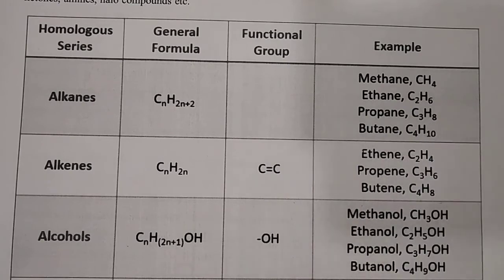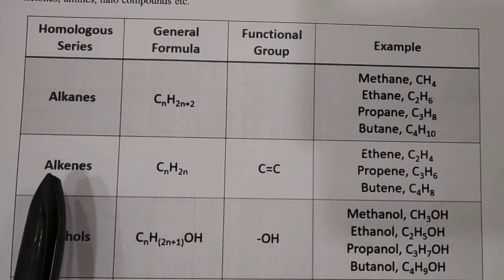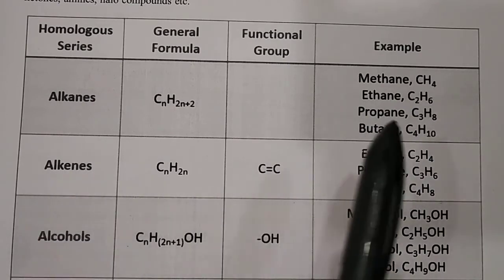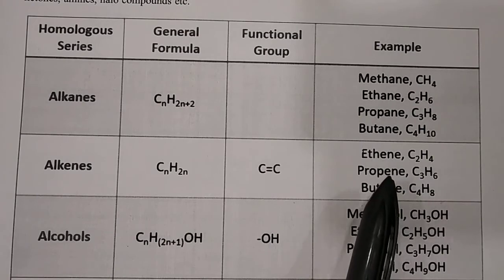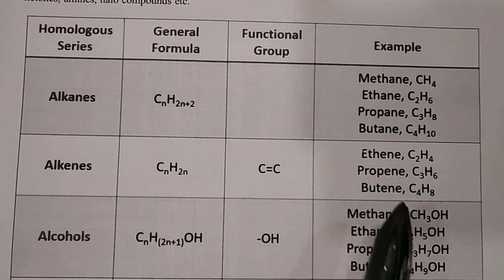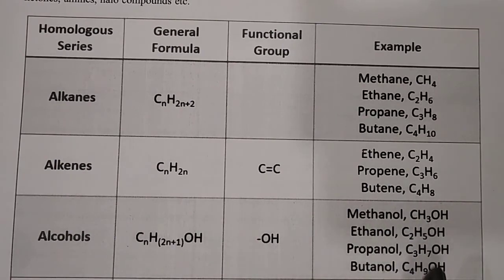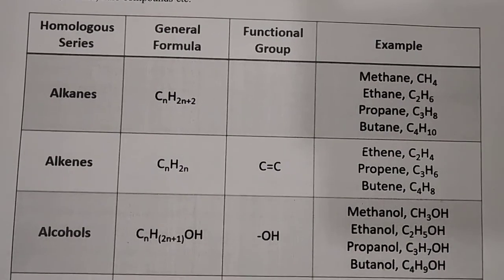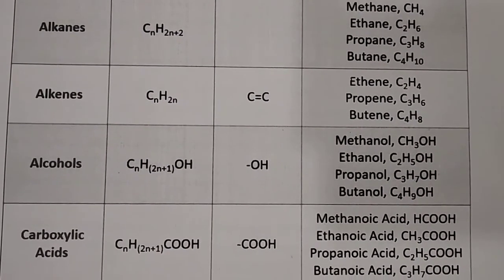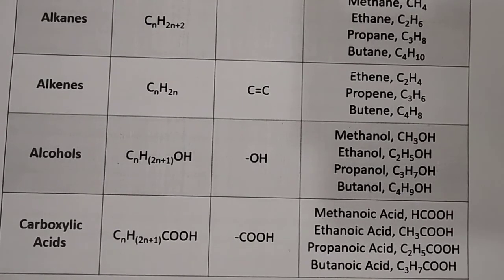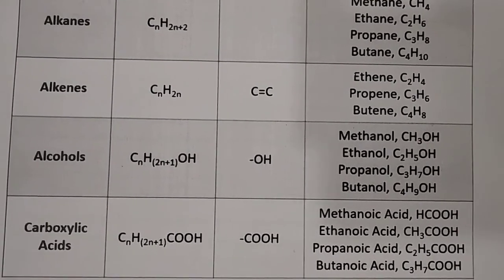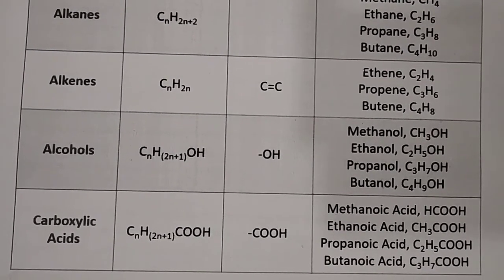The alkene homologous series includes ethene, propene, butene, and so on. For alcohols, the homologous series is: methanol, ethanol, propanol, butanol. For carboxylic acids, the homologous series carries the -COOH functional group.